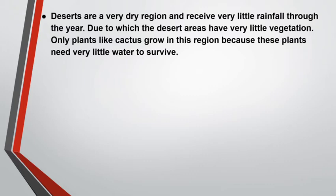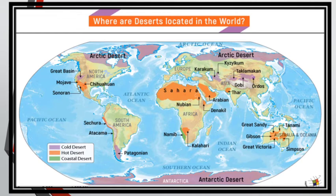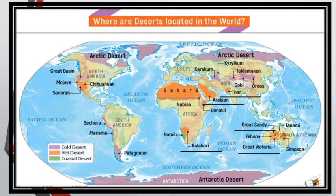Deserts are a very dry region and receive very little rainfall through the year, due to which desert areas have very little vegetation. Only plants like cactus grow in this region because they need very little water to survive. As you can see in the map, most of the deserts are located on the west side of the continent. The Sahara Desert and the Kalahari Desert are in Africa. The Great Sandy Desert and the Great Victoria Desert lie in Australia. The Thar Desert and the Arabian Desert lie in Asia, and the Atacama Desert and the Patagonian Desert lie in South America.